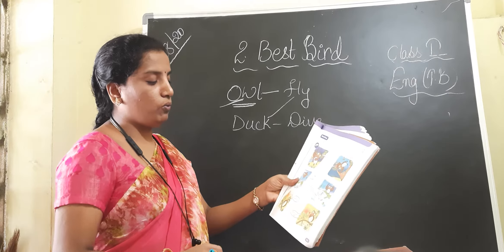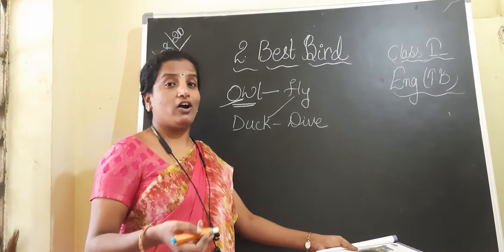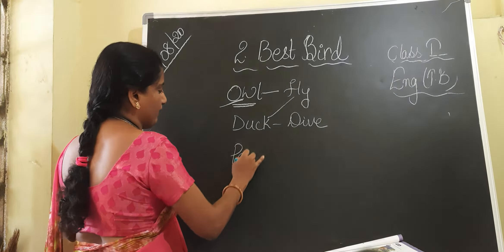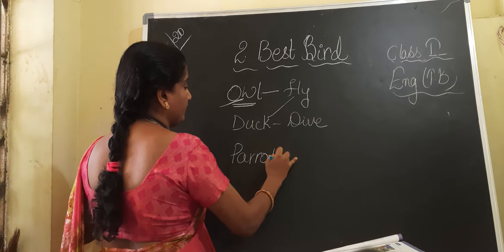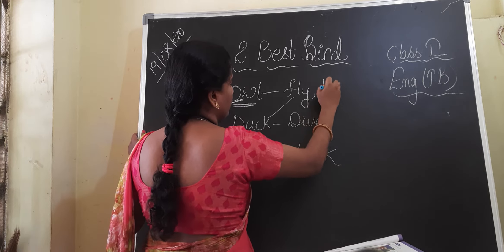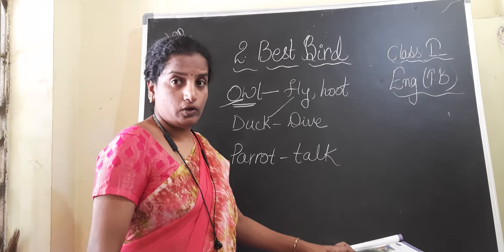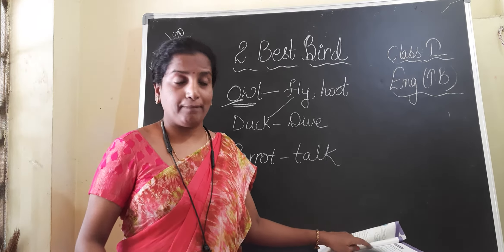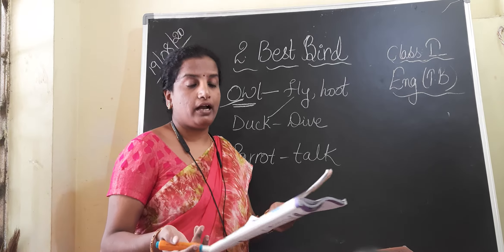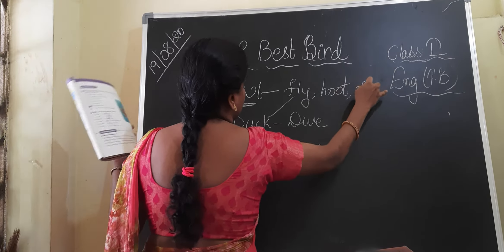'I can hoot,' means the owl can make sounds. Then the parrot came and compared — the parrot can talk, while the owl can hoot, meaning he can make a sound. And next, the owl says, 'I can see a long way.' The owl can see a long way.